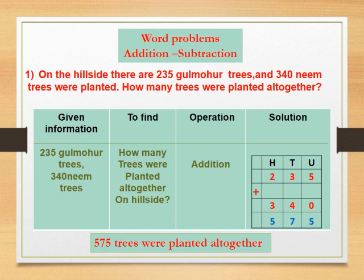मुलानो, या अधीचा भागात आपण गुणाकार, गुणाकाराचे गुणधर्म आणि गुणाकारावरील शाब्दिक उदाहरणे सोडवली. आज आपण इथे बेरीज आणि वजाबाकीची शाब्दिक उदाहरणे कशी सोडवायची ते पाहणार आहोत.